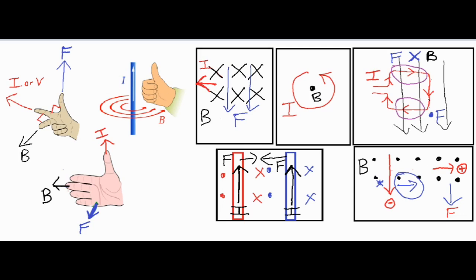To summarize the three right-hand rules: the right grip rule is only for situations with wires where current runs down a single wire or in a loop. The right palm rule and the three-finger rule can be used interchangeably — it's just preference and whichever is easier to maneuver your hand for the given problem. I hope that was helpful, thank you for watching.